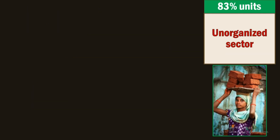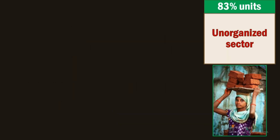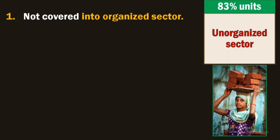So here the question arises: what is the difference between organized and unorganized sectors, and what is the partition between them? Hardly 17% of all industries fall in the organized sector, and mainly 83% of industries are in the unorganized sector. So the question arises: what is the unorganized sector and how can we recognize it?